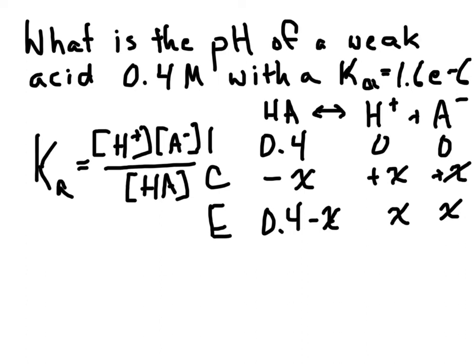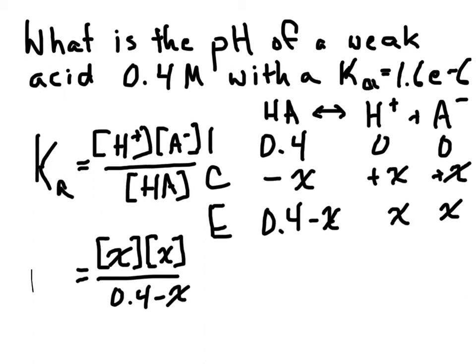So now we can plug in our values. So we're going to have concentration of X times the concentration of X over 0.4 minus X. And that will be equal to our Ka value, which is 1.6e to the negative 6th.